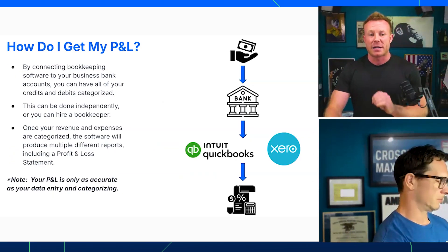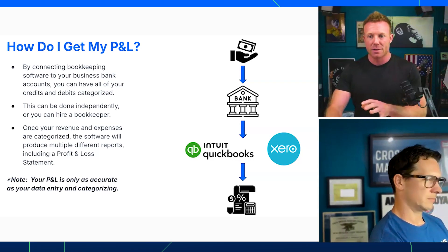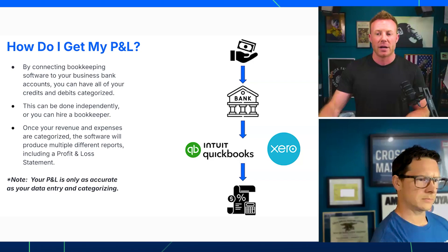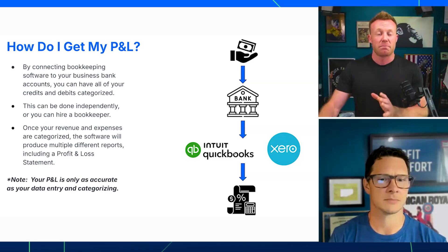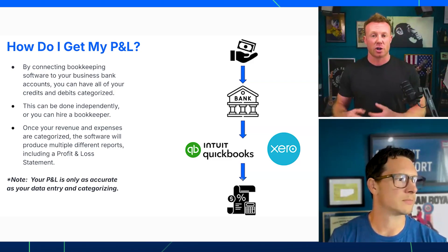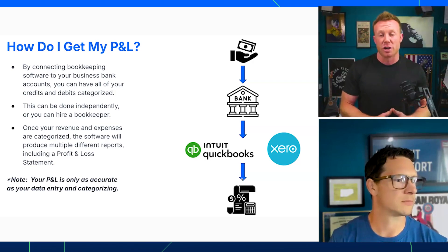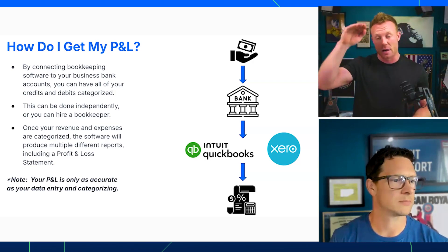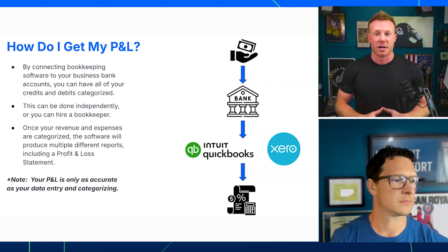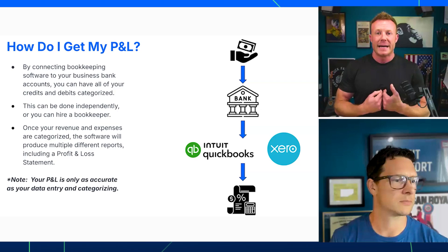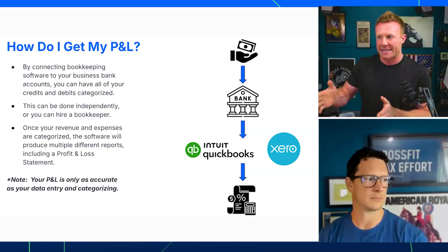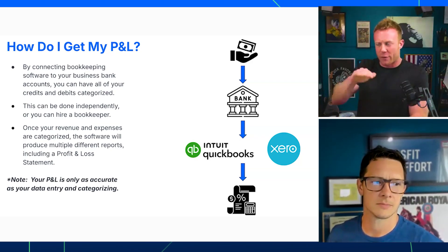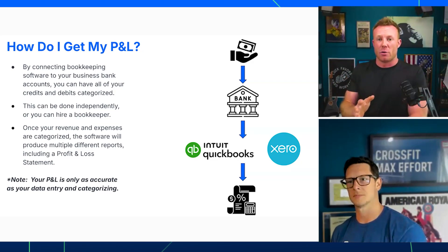To get your P&L, connect bookkeeping software to your business bank account. People give you money, it goes into your bank, you connect your bank to QuickBooks or Zero, and those softwares create numerous reports. If you have a bookkeeper who does your reconciliations, great. If you're doing it yourself, you have to be diligent — doing it weekly or monthly. If you forget for 90 days you'll have to go back and categorize three months of expenses.